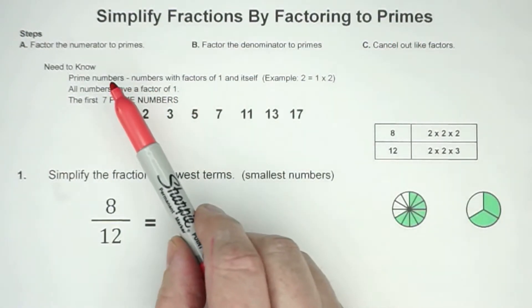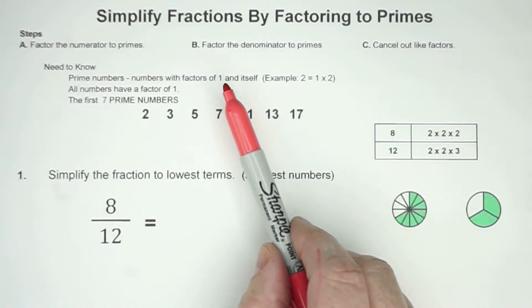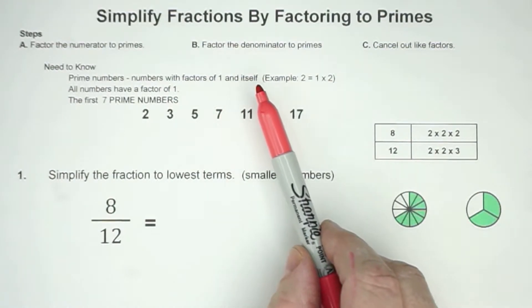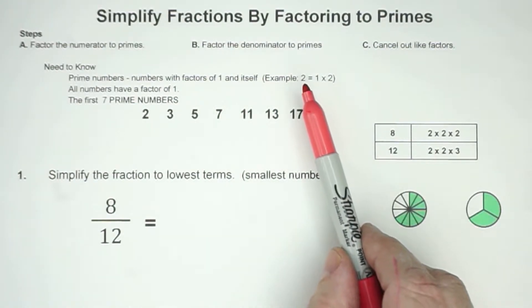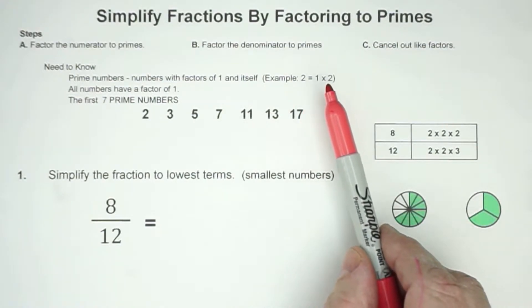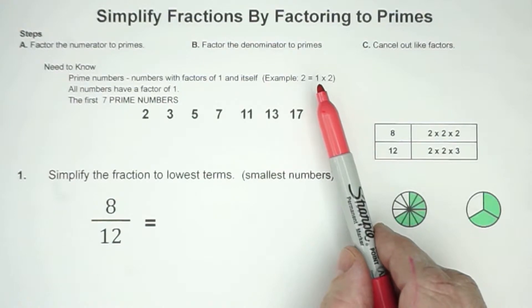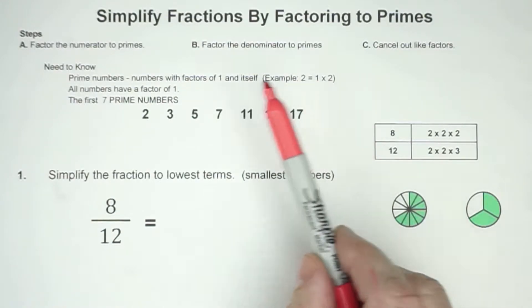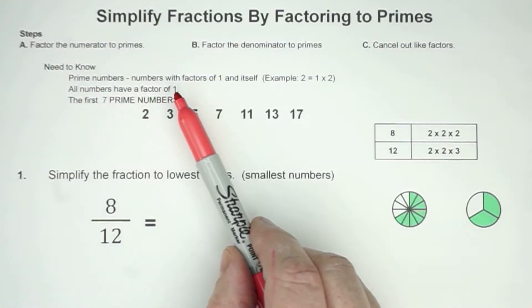Prime numbers are numbers with factors of only 1 and itself. For example, 2, the only way to multiply to get 2 would be 1 times 2. You could switch them, but the numbers are still going to be 1 times 2. You want to remember that all numbers have a factor of 1.